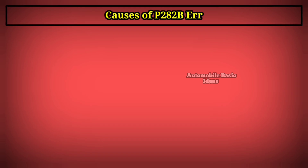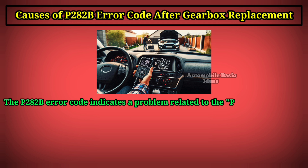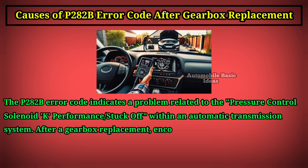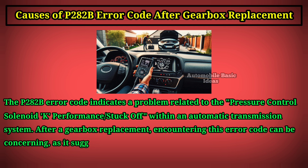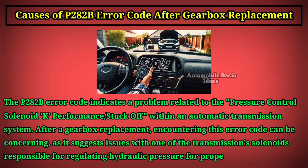Causes of P282B error code after gearbox replacement. The P282B error code indicates a problem related to the pressure control solenoid K performance or stuck off within an automatic transmission system. After a gearbox replacement, encountering this error code can be concerning, as it suggests issues with one of the transmission solenoids responsible for regulating hydraulic pressure for proper gear shifting.